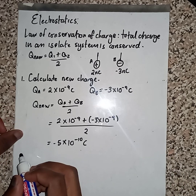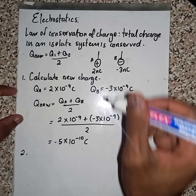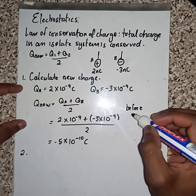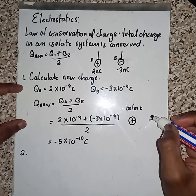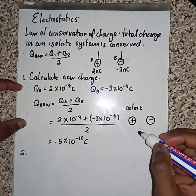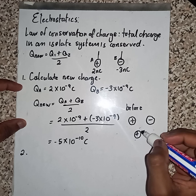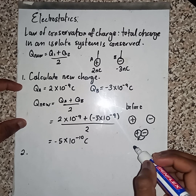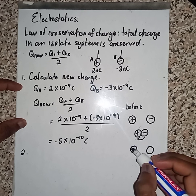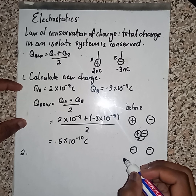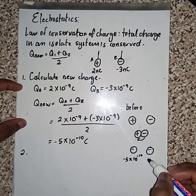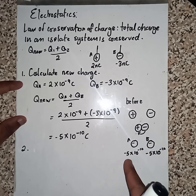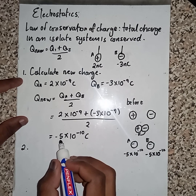Now, these two charges — before we had a positive together with a negative charge. During attraction, the electrons will move from B into A. After a while we are going to have a situation where it is negatively charged. Each will have minus 5 times 10 to the power of minus 10. So A and B will both have negative 5 times 10 to the power of minus 10 as their new charge.